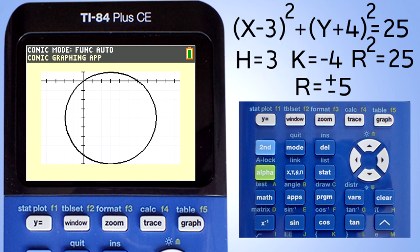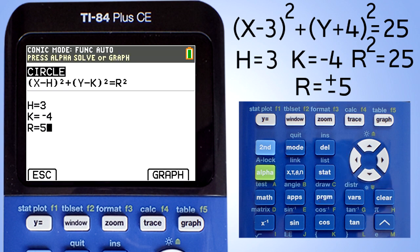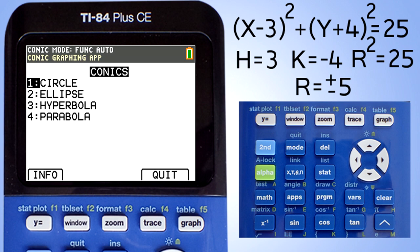To escape out of this graph, press the Clear button here. It will bring you back to this screen and you can graph your next circle. To escape out of this screen, press this Y= key here. It will bring you back to this screen.